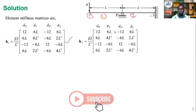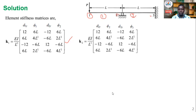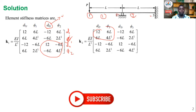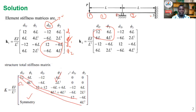K1 and K2 are the same because both elements have the same material properties and geometry. For the combination, the common node is node two, so only those quantities associated with d2y and θ2 are shared at that node. By superposition you can combine both stiffness matrices and come up with the global stiffness matrix. The stiffness matrix is symmetrical, which means you can simplify your work.